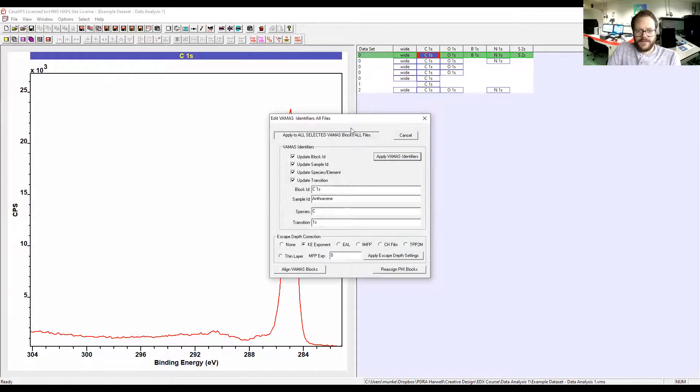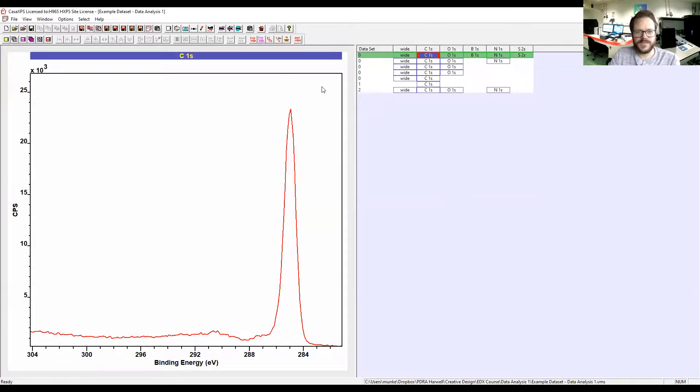Finally, in here we have the VAMAS identifiers. We have things like the Block ID, the sample name, and what the element and the orbital are. The Block ID is our column header up here, obviously the sample name, and then we have the element and transition which will link into how the software opens up the sensitivity factors. It's not the end of the world if these aren't correct, but again I wouldn't recommend changing them because it's good for you to know what element and what orbital was recorded here.